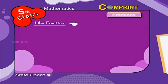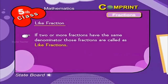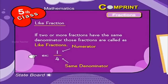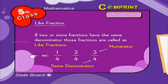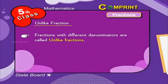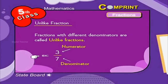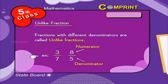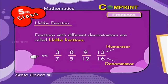Like fractions: if two or more fractions have the same denominator, those fractions are called like fractions. For example, 1 by 4, 2 by 4, 3 by 4, and 5 by 4, and so on. Unlike fractions: fractions with different denominators are called unlike fractions. For example, 3 by 7, 8 by 5, 9 by 12, 12 by 16, and so on.